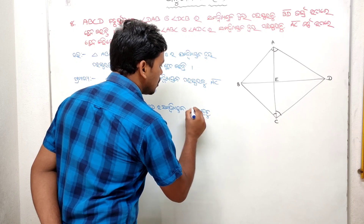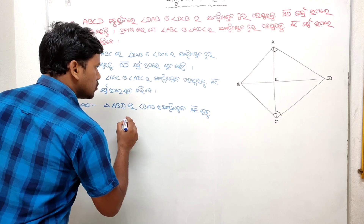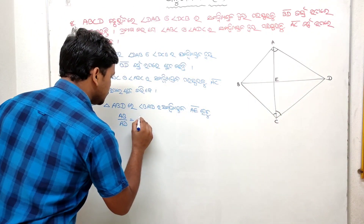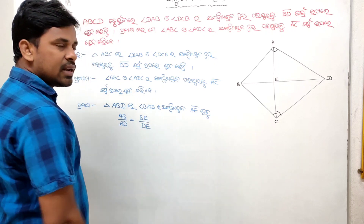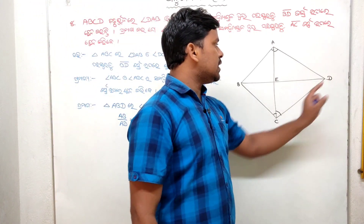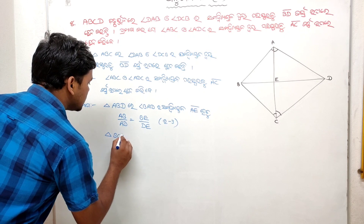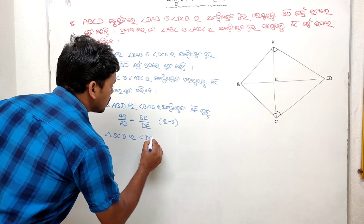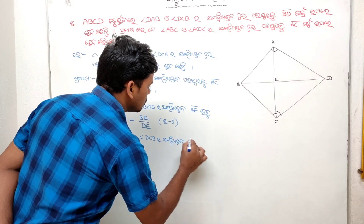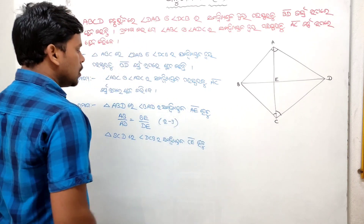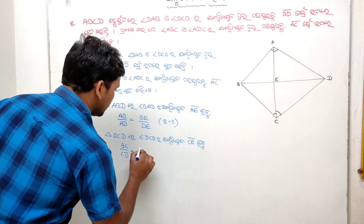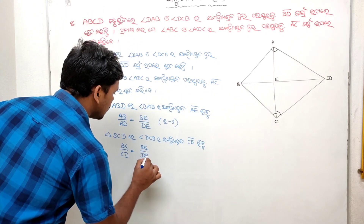Angle BAD is equal to AB by AD, which is equal to BE by DE. If you put the size of angle BAD, it equals BE by DE. And CE... BC by CD is equal to BE by DE. This is the answer for this part.